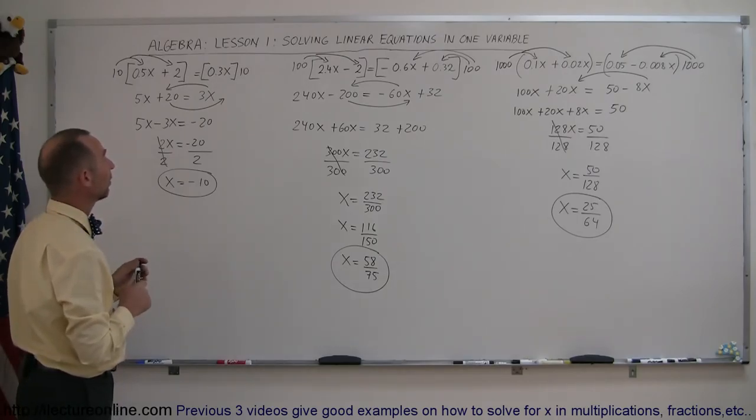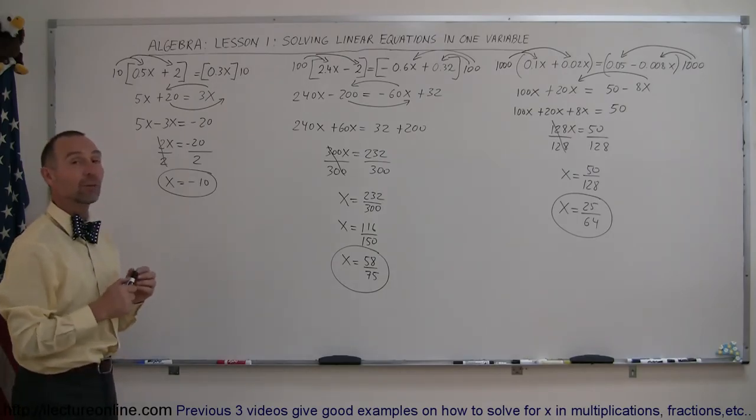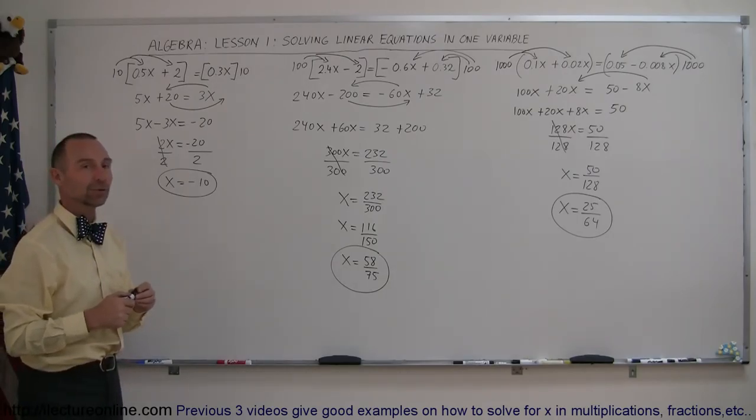At this point, I don't think they have a common factor, so that's about as low as I can go, and there's the answer. And that's how you solve equations in one variable when they're linear, but they have decimal places, so that's how you solve these types of equations. All right, that's the end of our lesson number one. Now look forward to lesson number two.